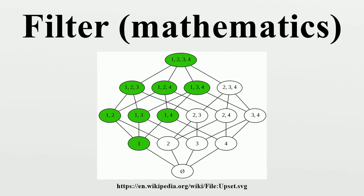Cauchy Filters: Let X be a metric space. To say that a filter base B on X is Cauchy means that for each real number ε > 0, there is a b ∈ B such that the metric diameter of b is less than ε. A sequence (x_n) in metric space X is a Cauchy sequence if and only if the filter base {x_n, x_{n+1}, ... : n = 1, 2, 3, ...} is Cauchy. More generally, given a uniform space X, a filter F on X is called a Cauchy filter if for every entourage U there is an A ∈ F with (x, y) ∈ U for all x, y ∈ A. In a metric space this agrees with the previous definition. X is said to be complete if every Cauchy filter converges.